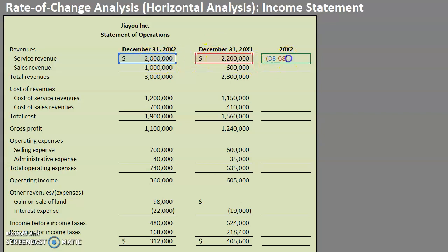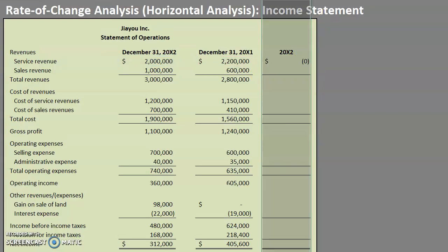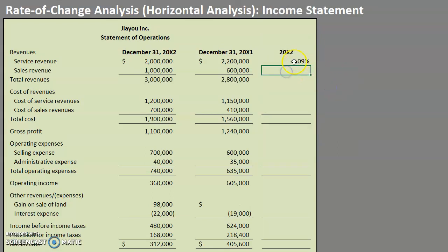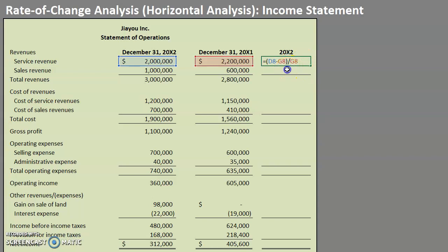So first we're finding the amount of the change, and then to find out how much it increased or decreased, we're basing this off of our prior year. So in our case, 20x1 would be considered our base year. If we take the prior year and divide the amount of the change by that prior year, we can see that this company's service revenue has declined by 9.09 percent from one year to the other, and we could go ahead and retype in this formula for every single one.